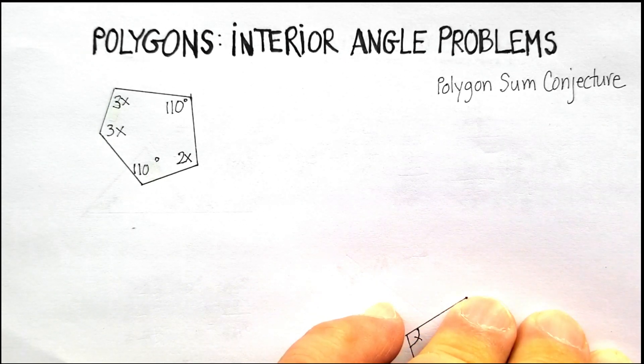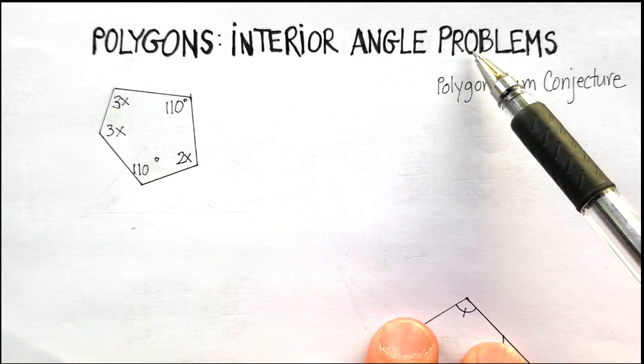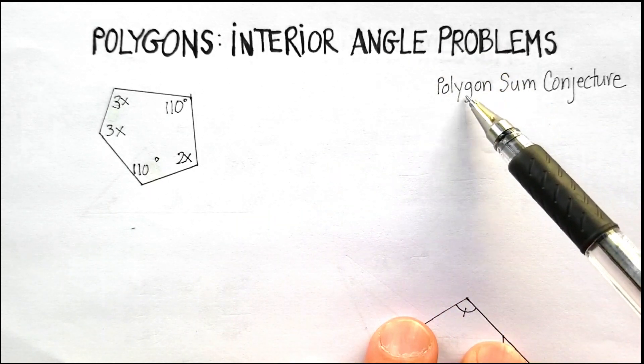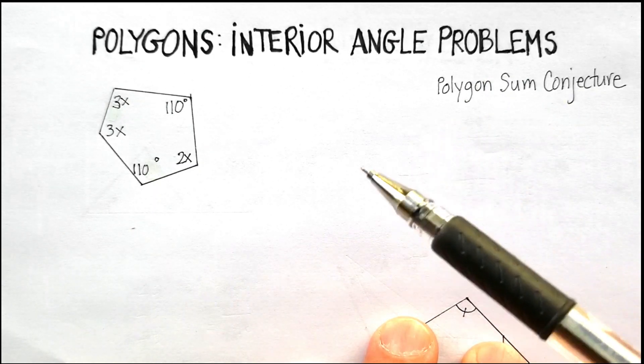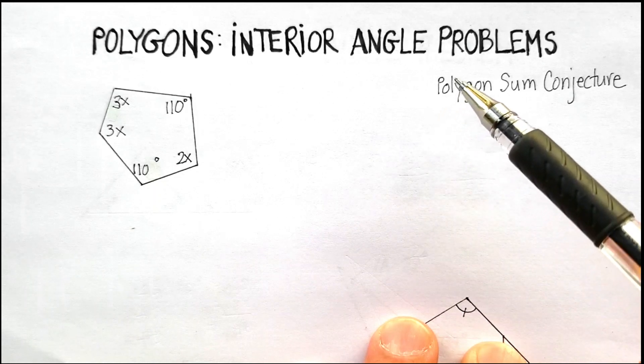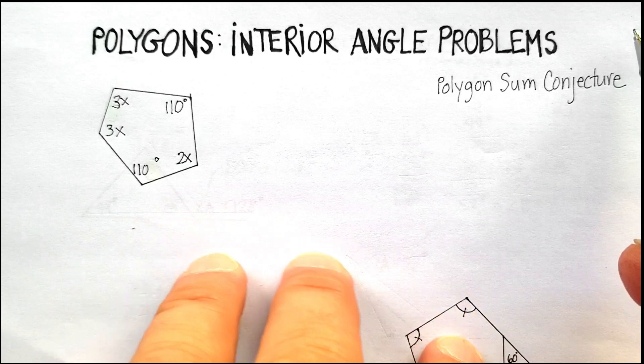Okay, in this video we're going to go over some interior angle problems using the polygon sum conjecture and also some exterior angle theorems. This is just two examples that I'm going to show you.